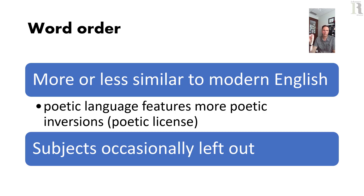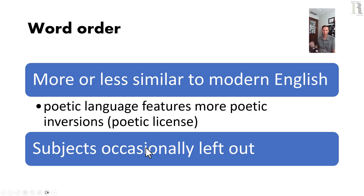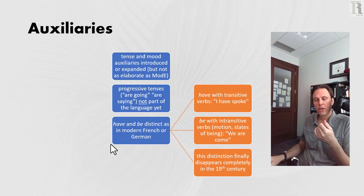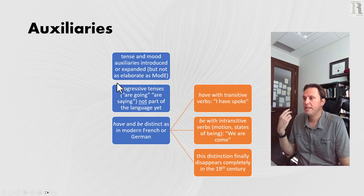Early modern English poetry is mostly in traditional accentual-syllabic verse forms, so meeting the requirements of the meter was more important than meeting the requirements of standard grammar. Subjects were also occasionally left out — King Lear says to his fool 'art well,' meaning 'are you well,' leaving out the 'you.' Another big feature is the increasing adoption of auxiliaries; tense and modal auxiliaries are introduced or expanded, but are not as elaborate as in modern English.